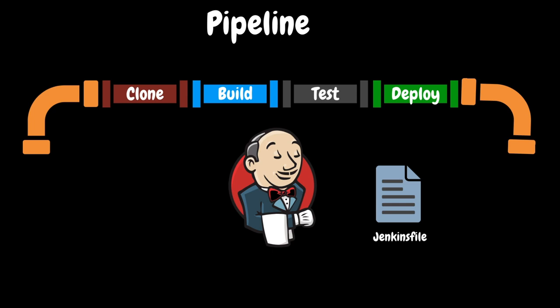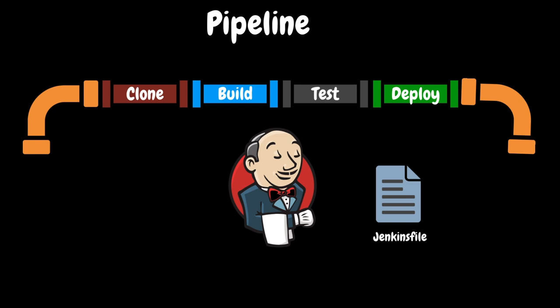This approach promotes the concept of pipeline as code. The pipeline script defines stages, steps, and conditions for the entire build and deployment process. Some of the common stages are clone, build, test, and deploy.